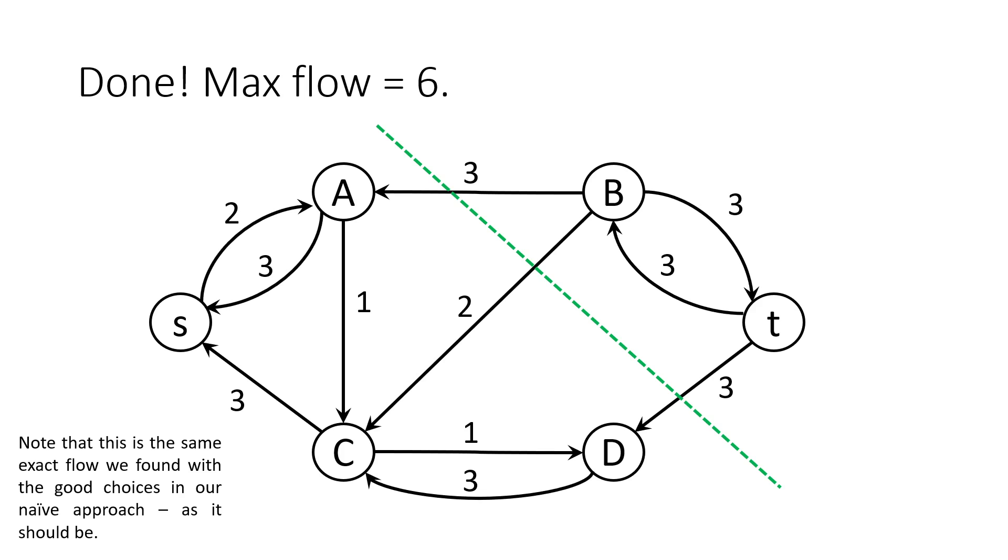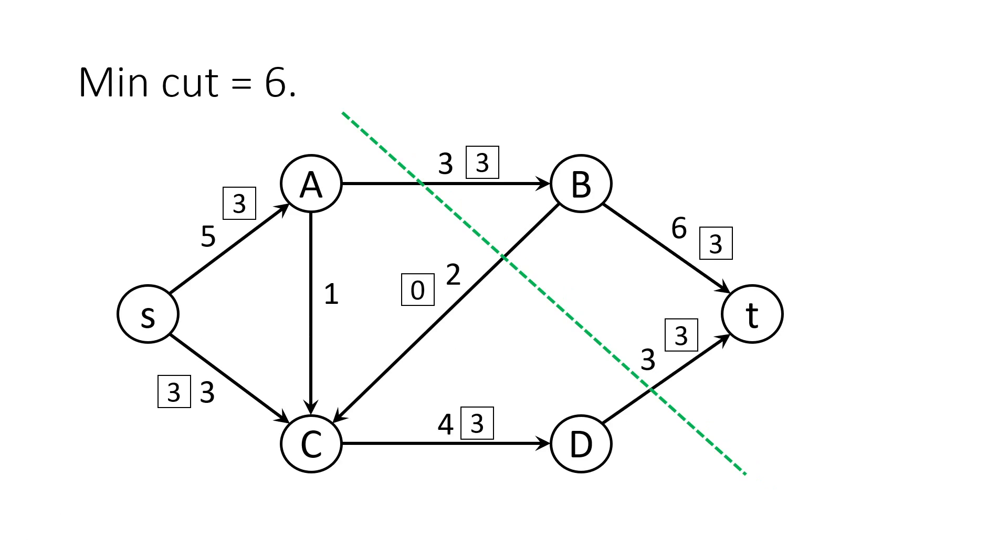In order to actually calculate the min cut, though, we need to look at the original graph. As you can see here, the min cut goes through two forward edges with capacities of 3 and 3, meaning that the total min cut is 6. We don't count the backwards edge BC, as it doesn't go from S to T like the others do.